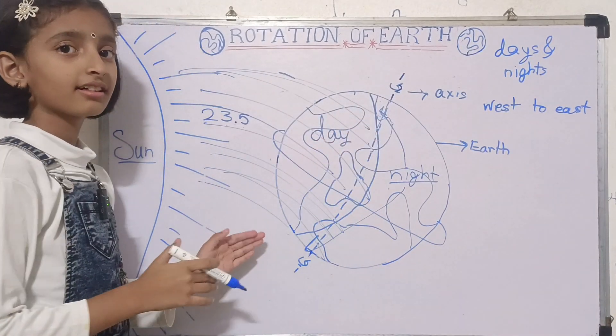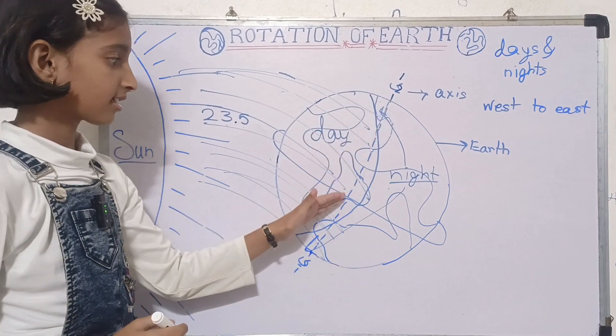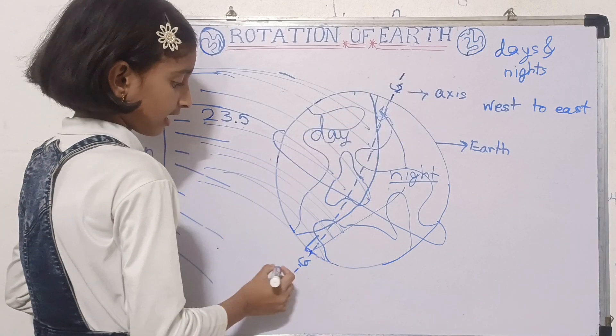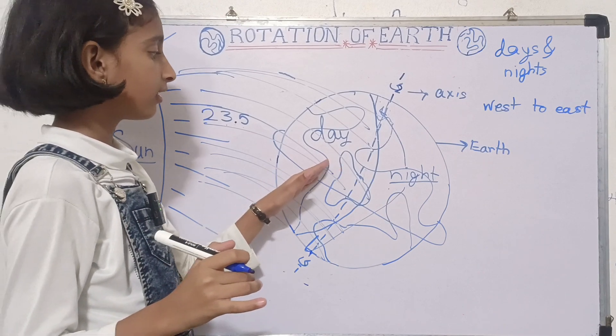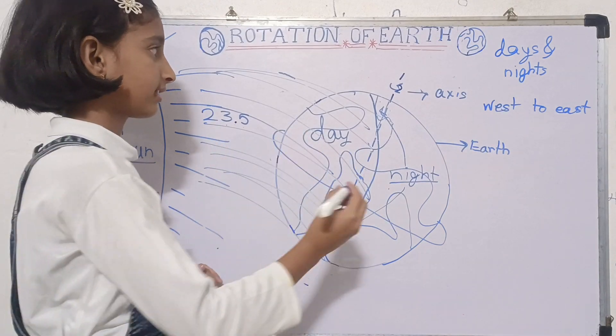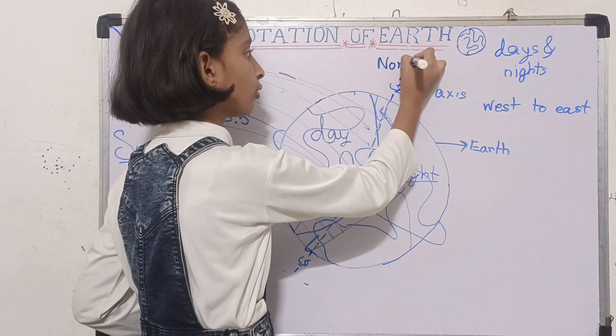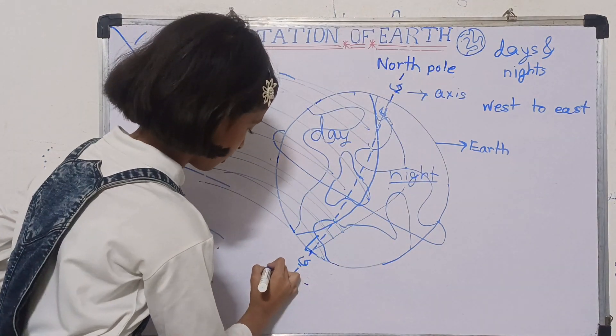Do you know why the Earth is able to rotate on its axis? Because the axis passes through the North Pole and South Pole. Because of this axis, the Earth is able to rotate from North Pole to South Pole.